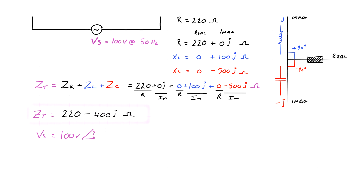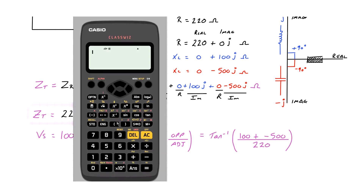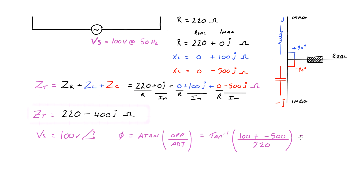The supply voltage is 100 volts at 50 hertz, but it will lead or lag the current because the reactances are not equal. The phase angle is arctan of the difference in reactances divided by the resistance, and that works out to be minus 61.19 degrees.